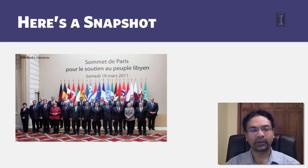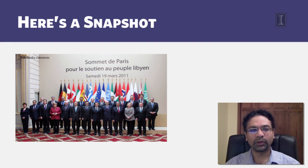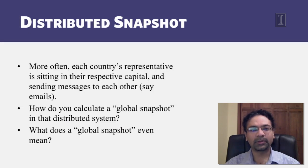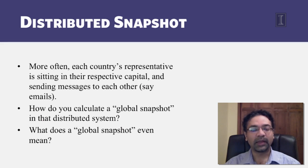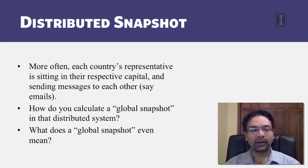This was done in Paris in 2011, so this is the easy way of calculating the snapshot. But that's not what we want to do. This problem really becomes challenging when the countries' representatives are sitting in their respective capitals and they're exchanging messages, say via emails sent to each other. In that case, in this very distributed system, calculating a global snapshot becomes very very challenging — in fact it's not even clear what a global snapshot even means when there are messages in transit among these different processes in the system.